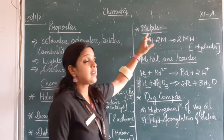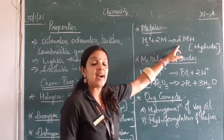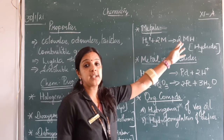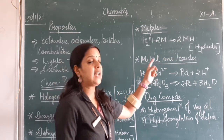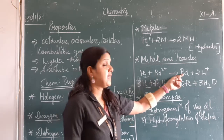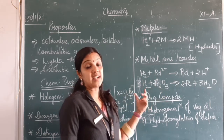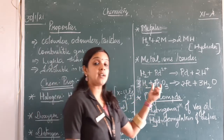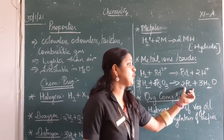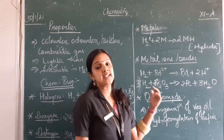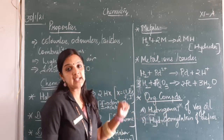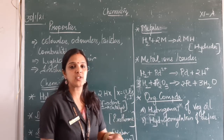When hydrogen combines with metals, it forms the corresponding hydrides — M refers to any alkaline metal like sodium, potassium, or lithium. When it reacts with metal ions, it reduces the metal ions to the corresponding metal, like when it reacts with palladium 2+ it gives palladium metal. When it reacts with oxides of metals, it converts the metal oxides to the corresponding metal. You can see hydrogen combining with iron oxide to form iron and water. For organic compounds, these two reactions — you need not learn the reaction, just learn the theory.